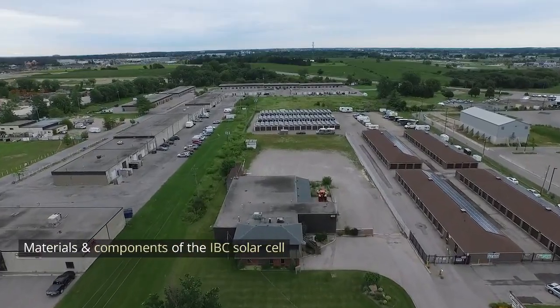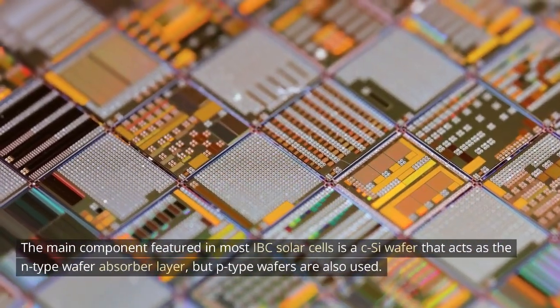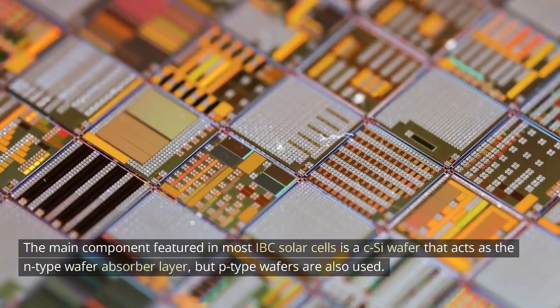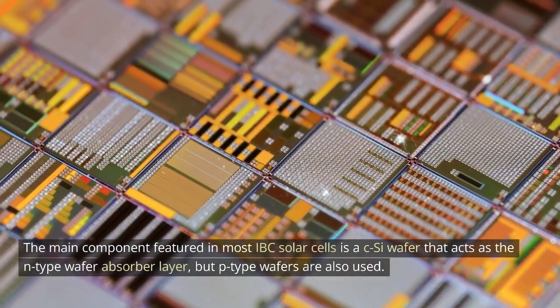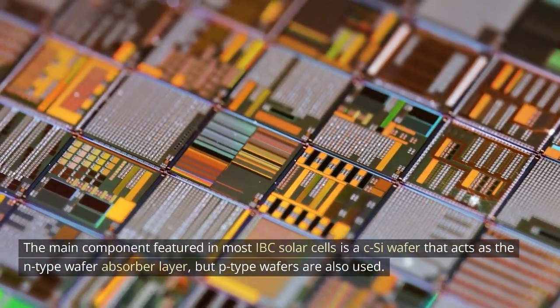Materials and components of the IBC solar cell. The main component featured in most IBC solar cells is a c-Si wafer that acts as the n-type wafer absorber layer, but p-type wafers are also used.